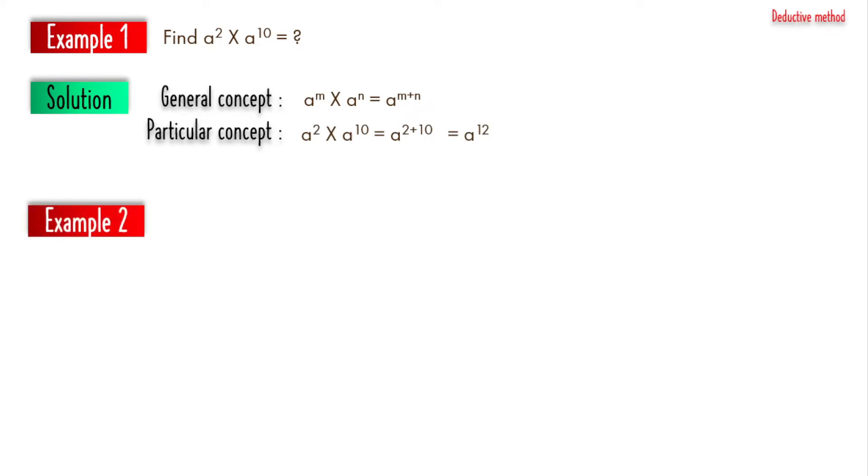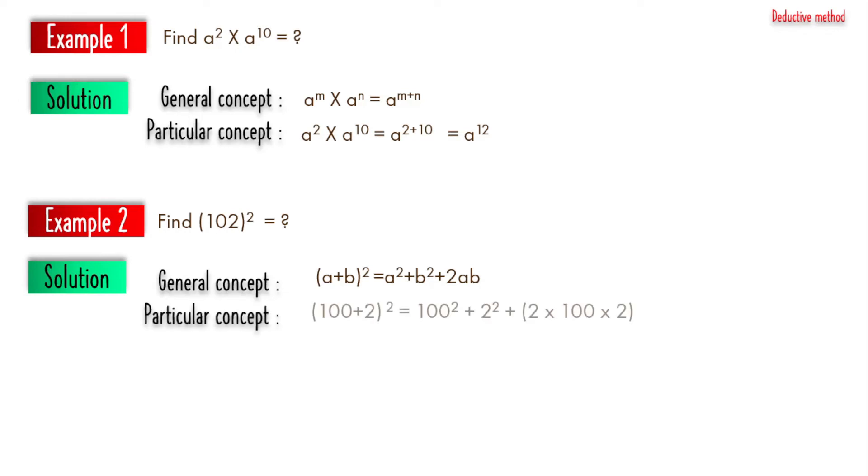In example 2, we have to find 102 square. Here the general concept is a plus b whole square equal to a square plus b square plus 2ab. Applying this general concept, we can easily solve the particular concept.